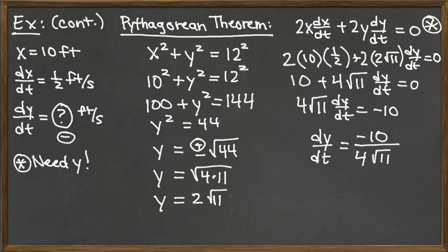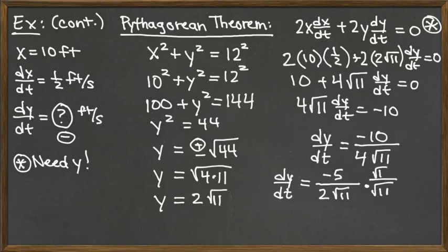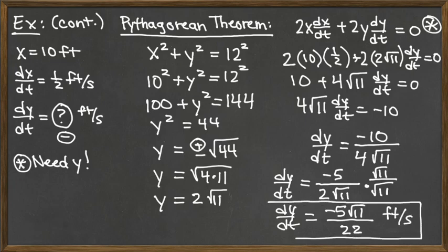We can simplify this a little bit and rationalize it too. The 10 and the 4 have a common factor of 2, so the fraction could be reduced by having 5 halves instead of 10 fourths. We still have the square root of 11 on the bottom, but the way we can get rid of it is by multiplying by a really fancy form of 1, which is square root of 11 over itself. So then dy/dt is going to be negative 5 root 11 over 2 times 11, so that would be 22. And we talked earlier about how this is going to be feet per second. And notice that it is in fact negative like we expected.